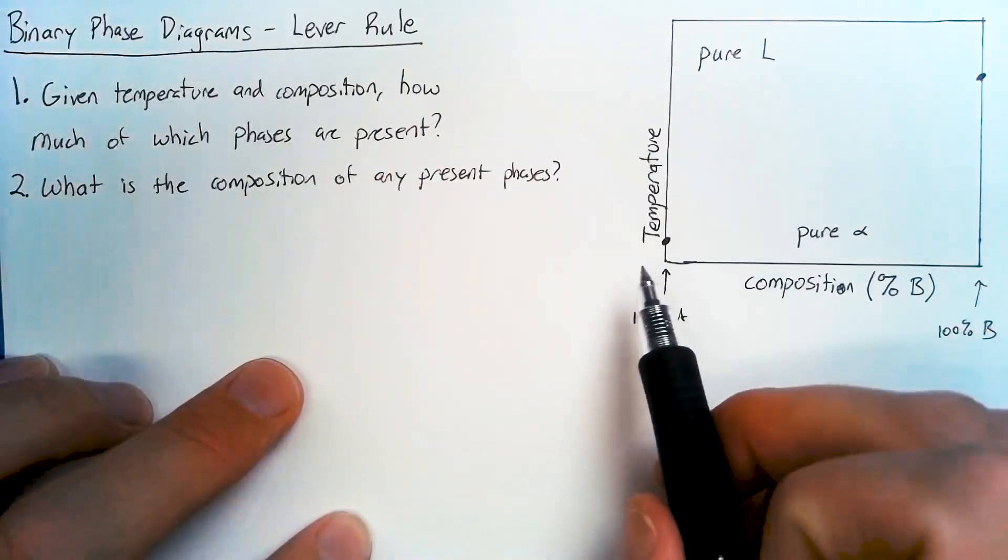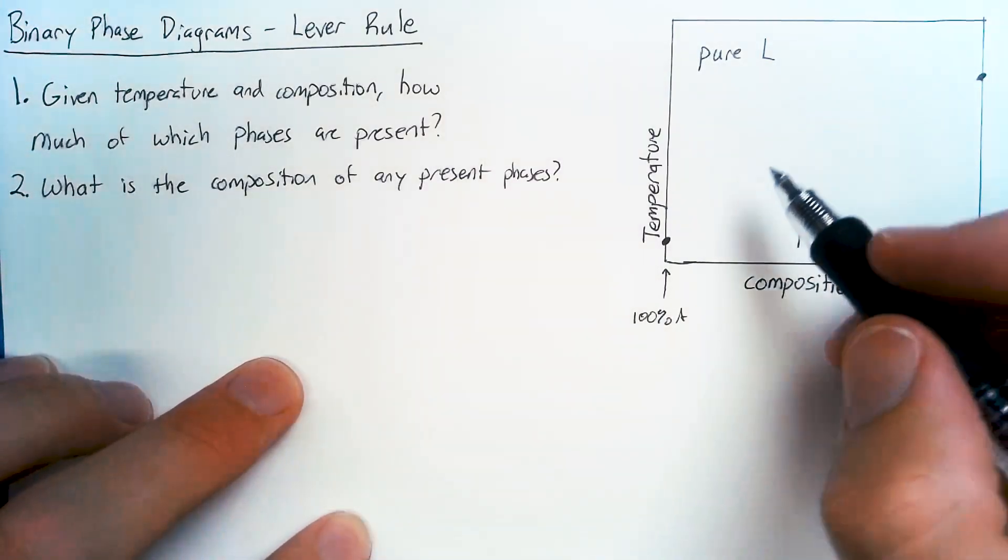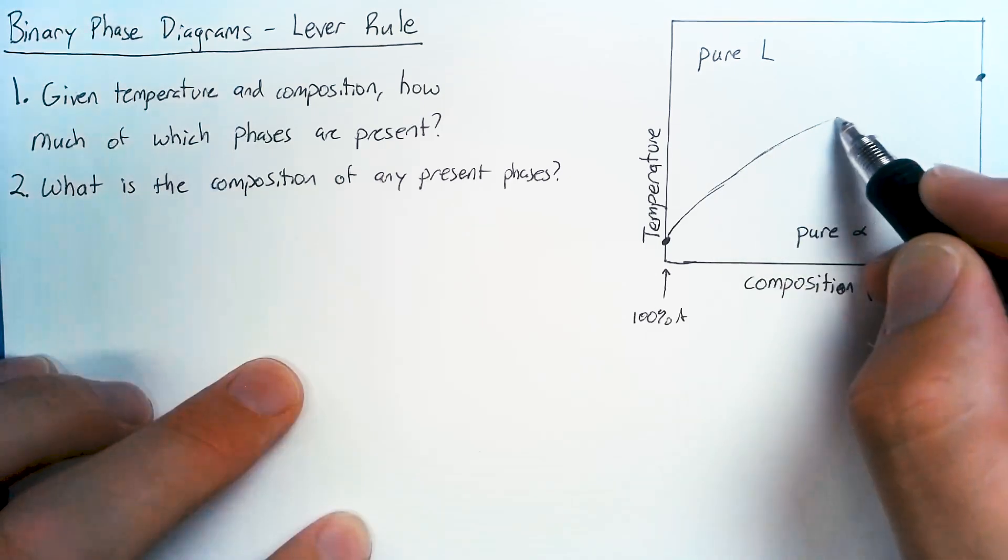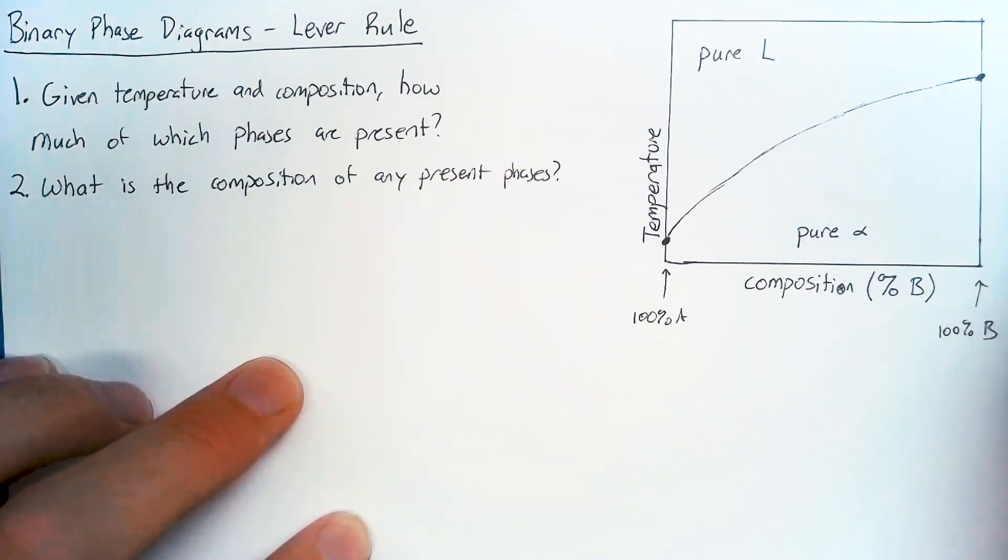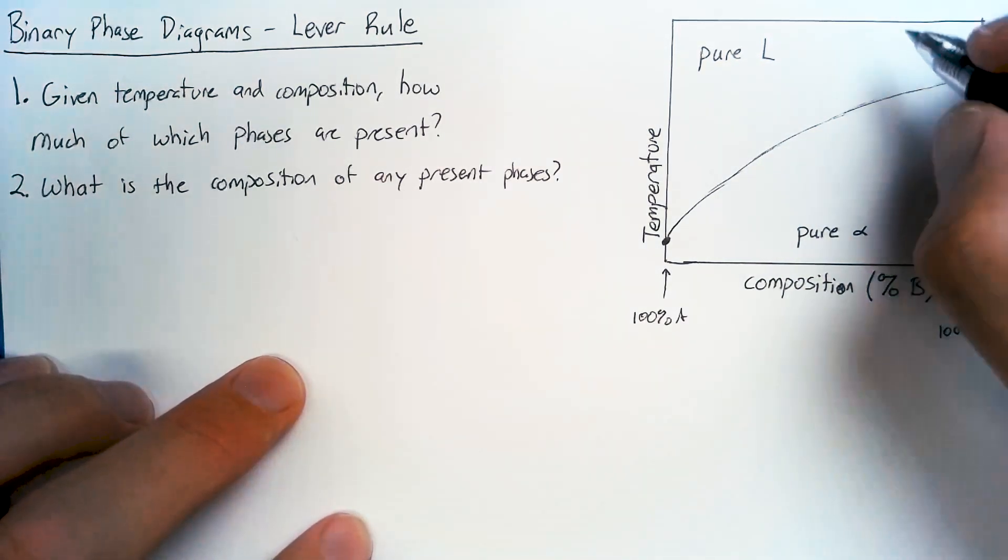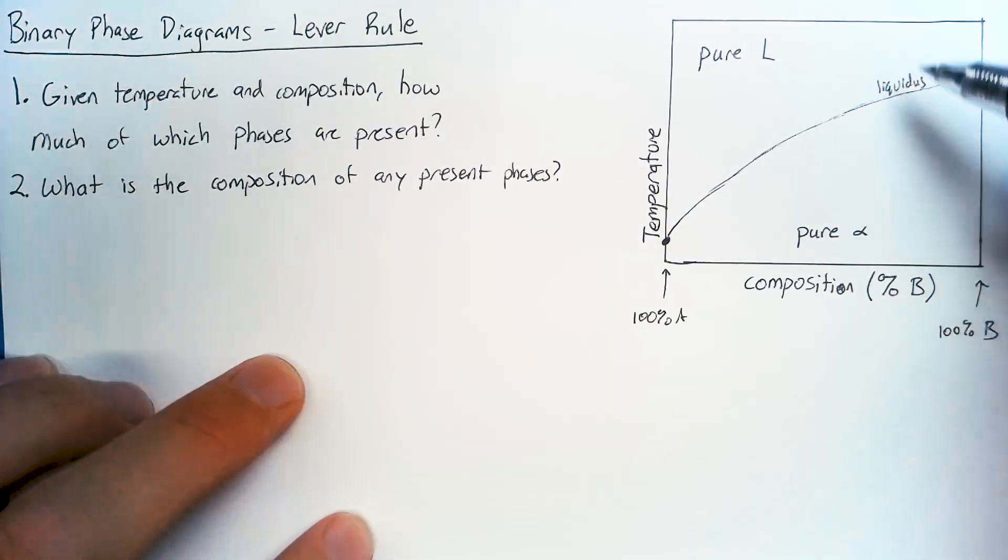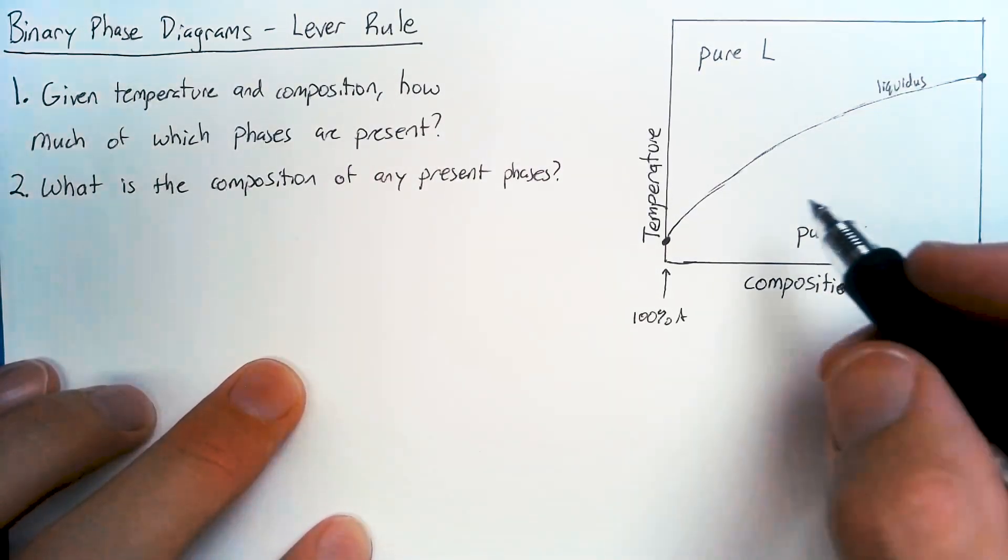And as we add more B, we expect that the melting temperature, where we get that pure liquid, increases. And we call this line the liquidus line, just meaning that above that line we are purely liquid.